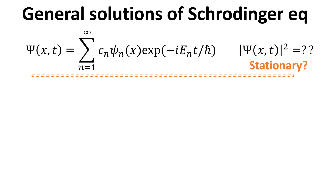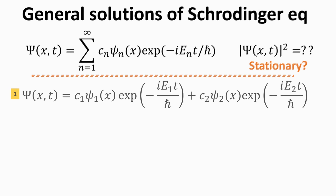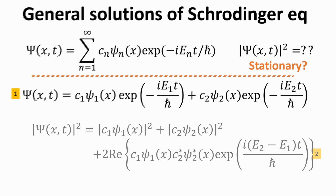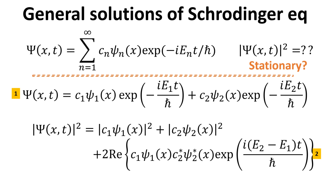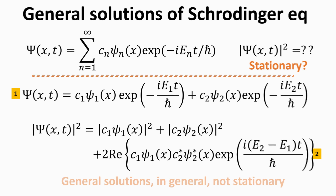However, such a general solution would not be a stationary state anymore. It is convenient to show this for a simple linear combination of two stationary states, as shown in equation 1. The probability density contains a term labeled 2, which consists of cross-products of the stationary states, resulting in a phase factor which is oscillatory in time. Thus, the general solution is not a stationary state. Every solution to the time-dependent Schrödinger equation can be written in this general form, and it just boils down to pinning down the values for the constants C n, which can be obtained given the initial conditions. We will defer to a future video about this with concrete examples.